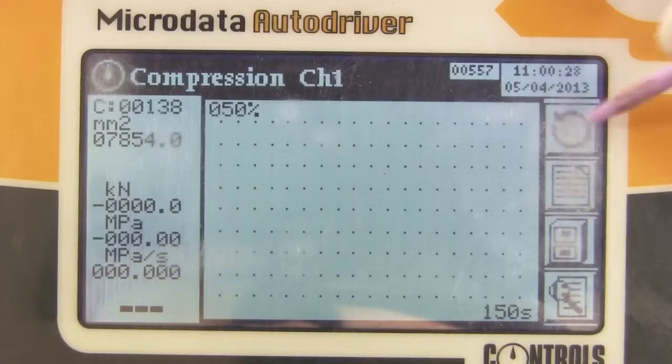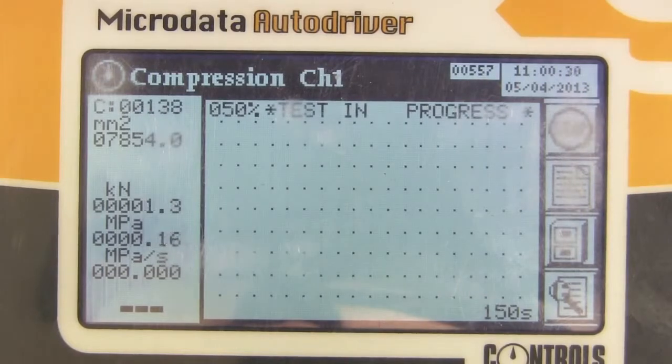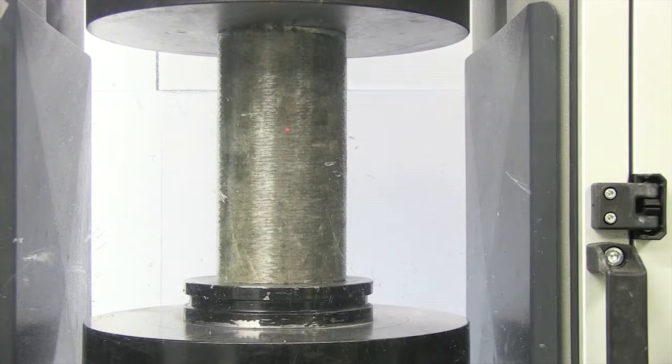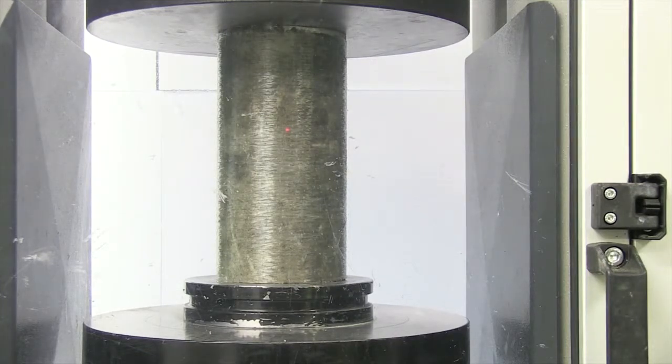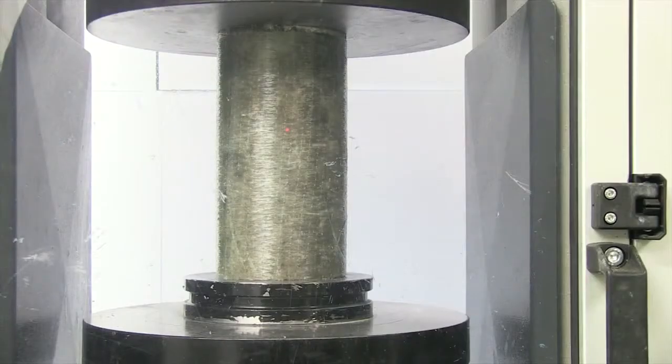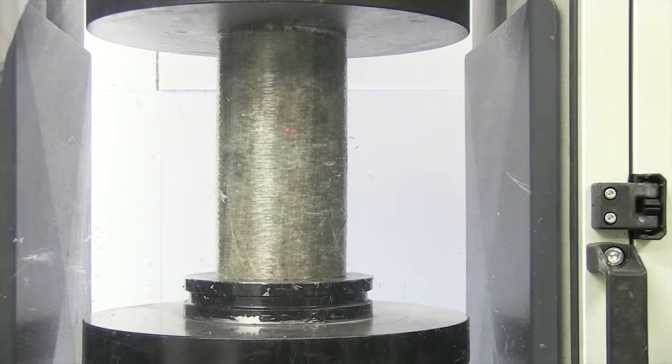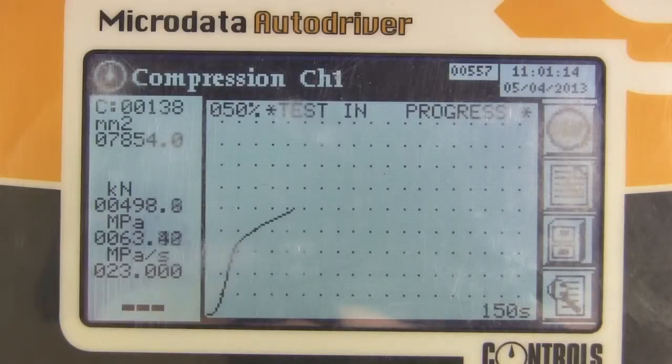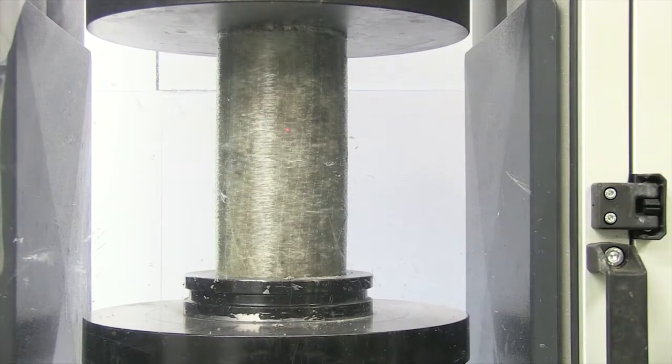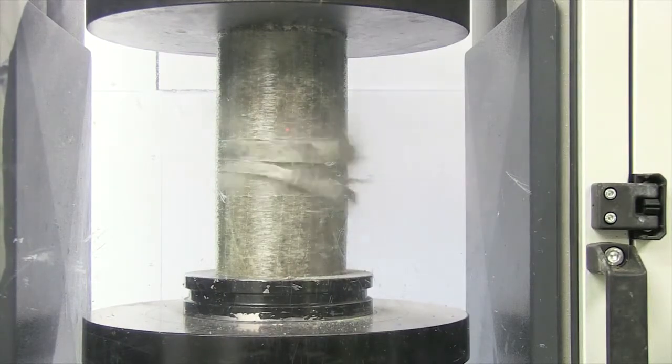Then we took the column wrapped in Seeker Wrap. On goes the compression force, and we wait. At this point, the unwrapped column had failed. When close to double the compressive forces exerted on it, finally the Seeker Wrap column fails.